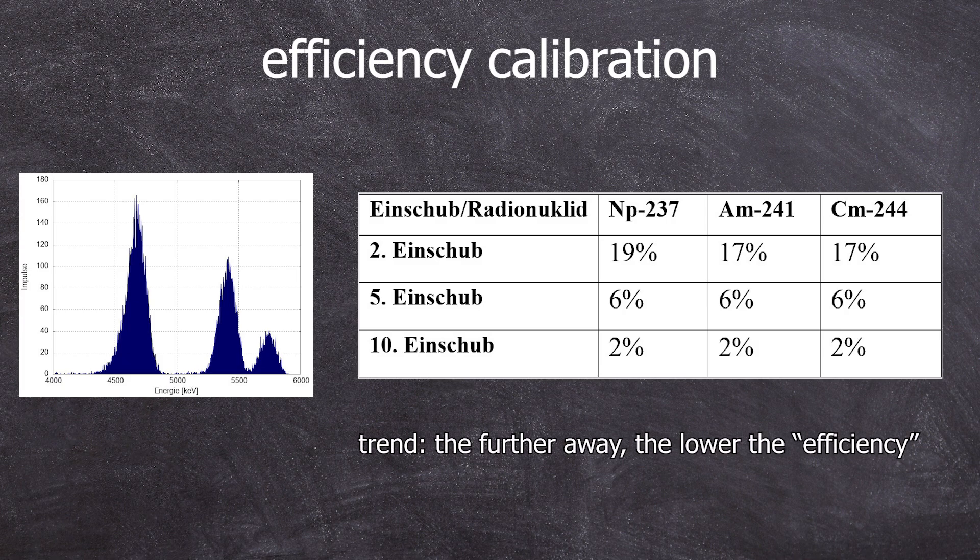However, when comparing the measurement results from the other slots, we notice a trend. The further away, the lower the efficiency. This is not really due to the detector, but to the so-called geometric factor. Since we had a platform on the Gaily where the distance remains the same, this was negligible in the efficiency calibration for the Gaily.